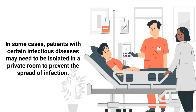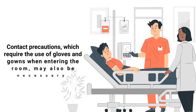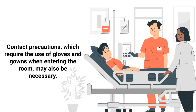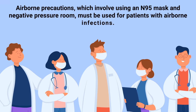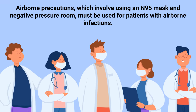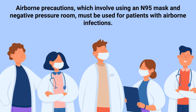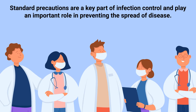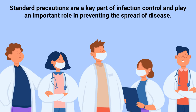In some cases, patients with certain infectious diseases may need to be isolated in a private room to prevent the spread of infection. Contact precautions, which require the use of gloves and gowns when entering the room, may also be necessary. Airborne precautions, which involve using an N95 mask and a negative pressure room, must be used for patients with airborne infections.